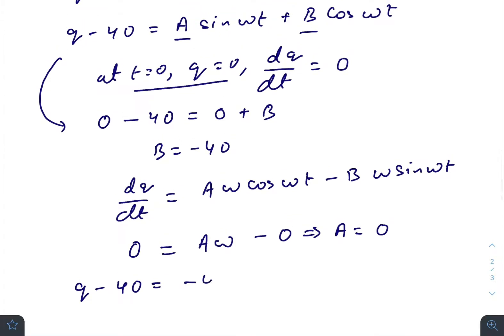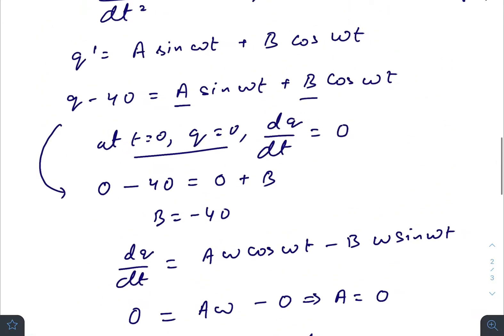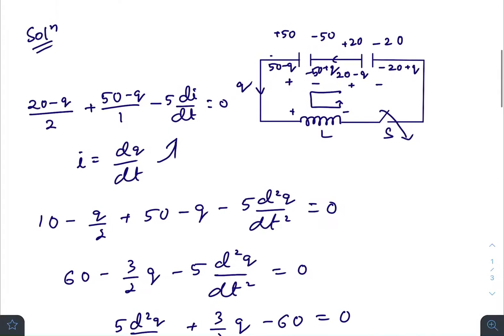B is minus 40, so q' equals minus 40 cos(ωt). The charge flowing through the whole circuit at any time t is q = 40(1 - cos(ωt)). So you got the charge flowing through the circuit at any time t.